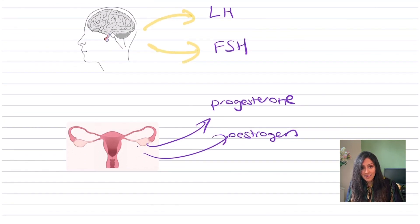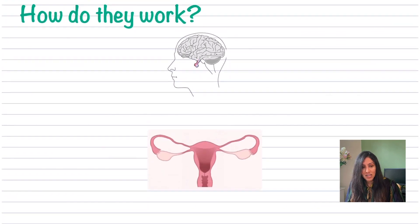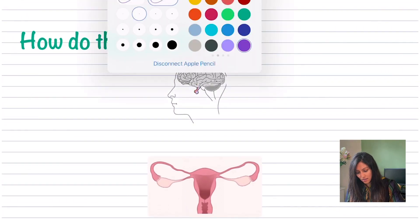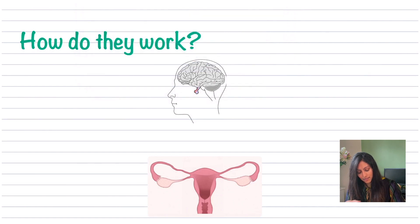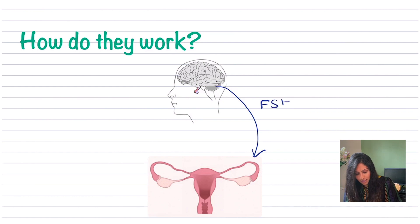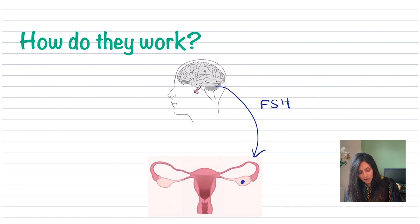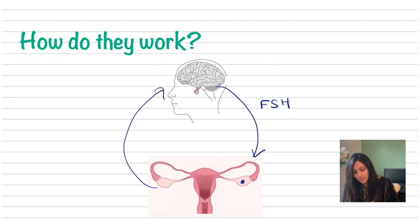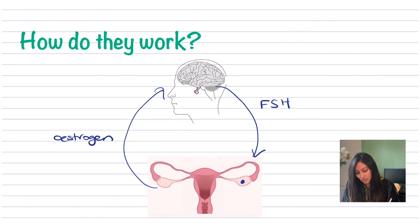Now let's look at how they actually work. The first hormone released from the pituitary gland is FSH. There's a little egg starting to develop in the ovaries, and FSH causes that egg to mature. Whilst this is happening, FSH also causes the release of the next hormone — which is oestrogen. So FSH causes the release of oestrogen.